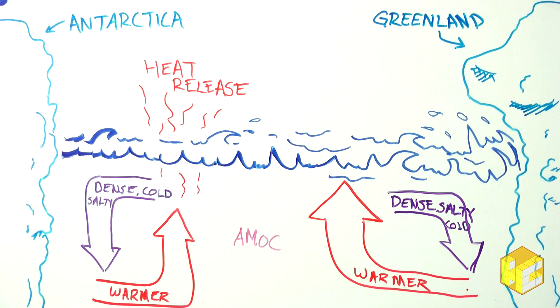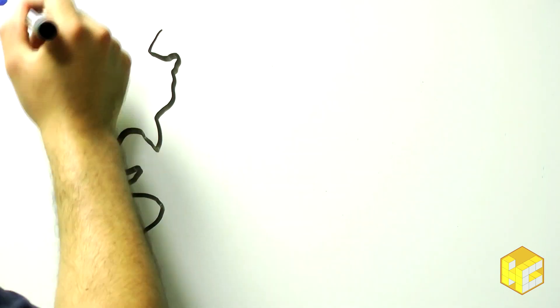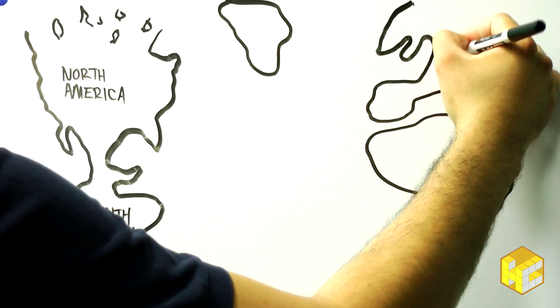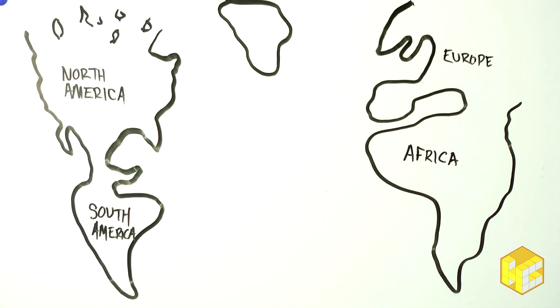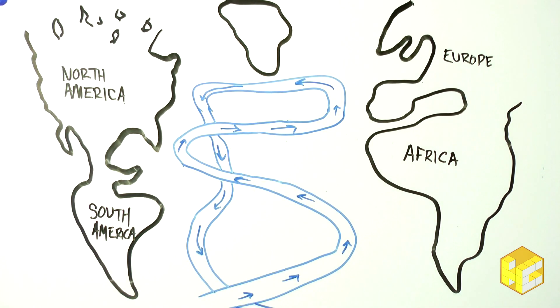The Atlantic Meridional Overturning Circulation, AMOC for short, connects the Antarctic waters to the North Atlantic. This current has a huge impact on the global climate. While it is strong, it mediates temperatures, warming the east coast of the United States and the west coast of Europe, and cooling the western and eastern coasts of Africa and South America, respectively.